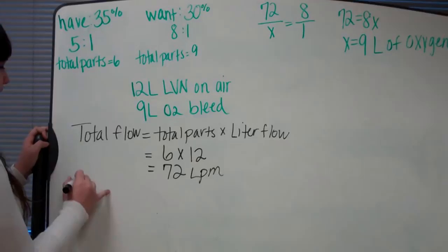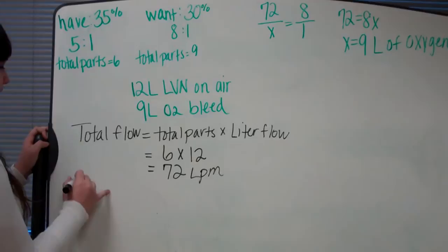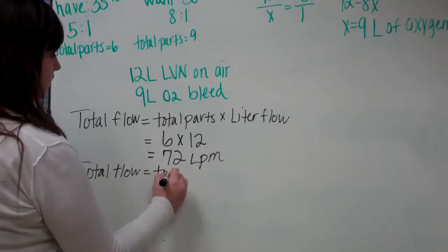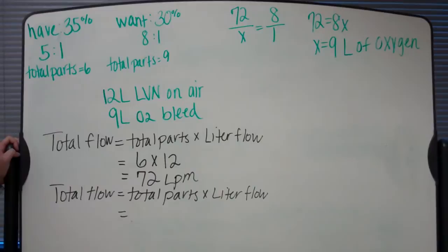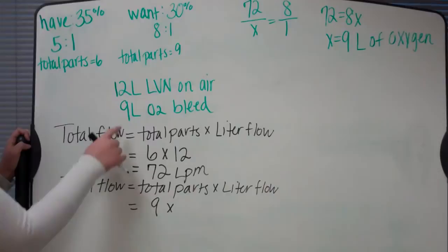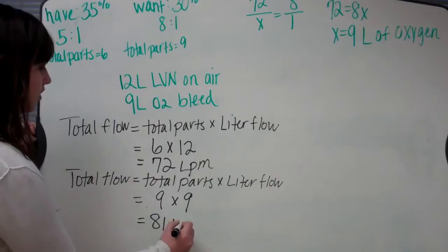For our 9 liter O2 bleed, we again do the same equation: total flow equals total parts times liter flow. Our total parts for 30% we figured out was 9, so 9 times our liter flow, which we picked was 9. 9 times 9 is 81 for our total flow.